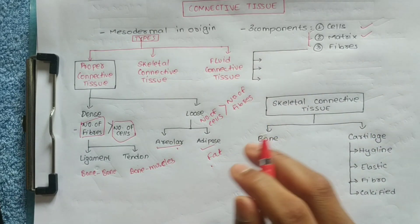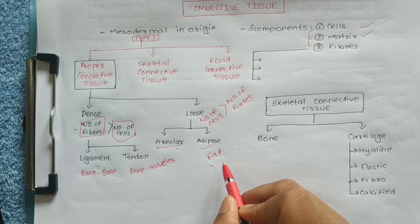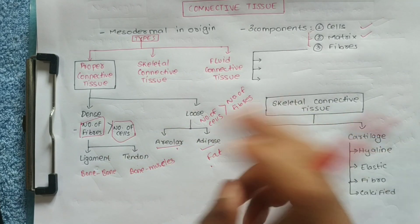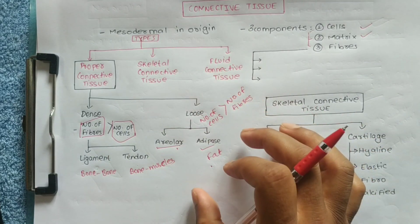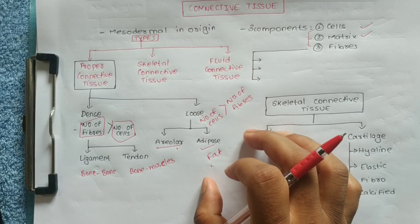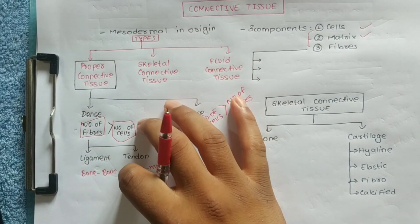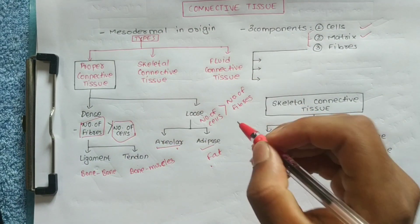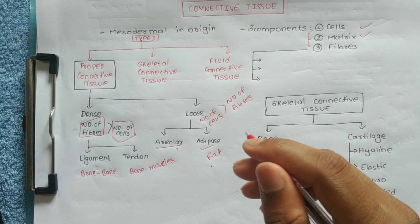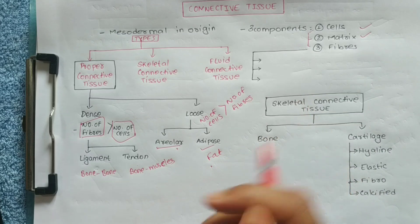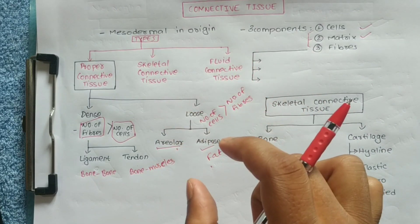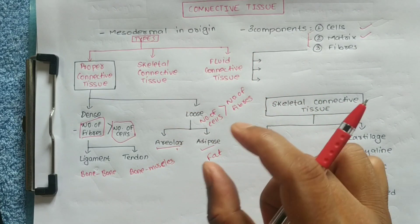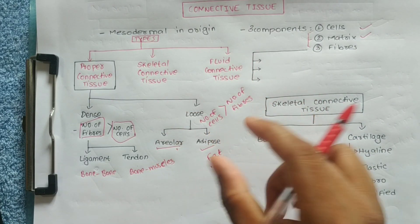Adipose tissue stores lipids. When lipids break down, energy is released. This is how adipose tissue serves as an energy provider for the body.